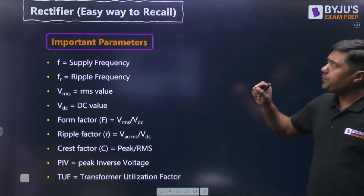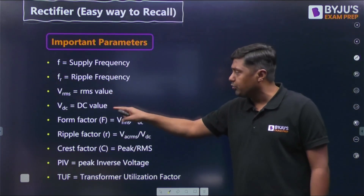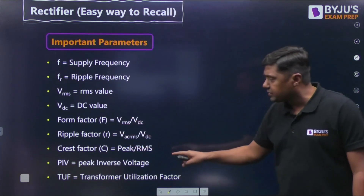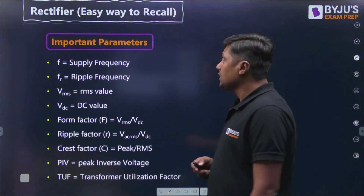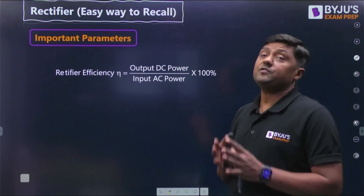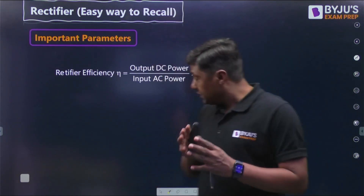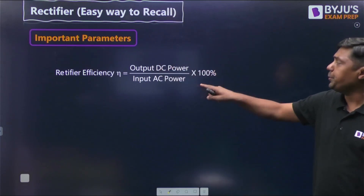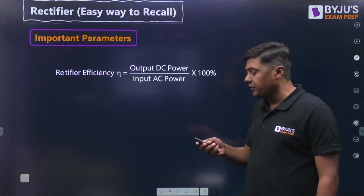The important parameters are: supply frequency, ripple frequency, RMS value, DC value, form factor, ripple factor, crest factor, PIV, and transformer utilization factor. Rectifier efficiency is defined as output DC power divided by input AC power, multiplied by 100%.